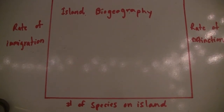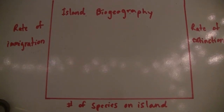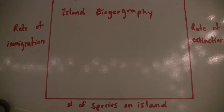We'll start with a couple of models. The theory of island biogeography is about how the number of species on an island will affect the extinction rate, and that's all dependent on whether the island is large or small, and whether it's far from or close to the mainland. So we'll look at those ratios.